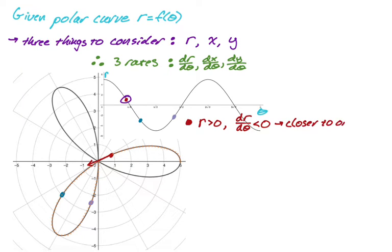If R is positive and dr/dθ is negative, then the absolute value is decreasing — you're getting closer to the origin. If R is negative and dr/dθ is negative, then the absolute value is increasing — you're getting farther from the origin. So we're going to have to think about that relationship.